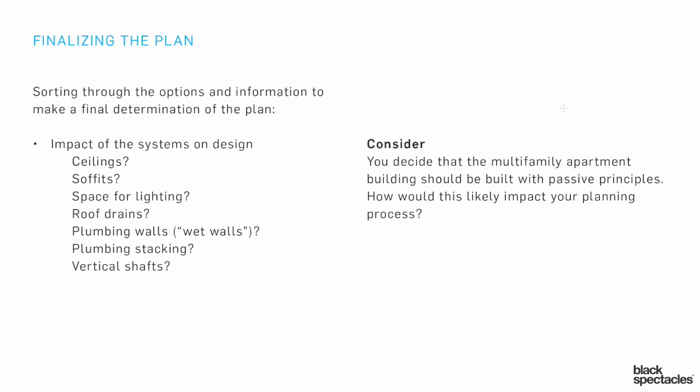Let's think of an example where we have an issue coming from the program and the options we went through, and we're trying to think about the impact that issue is going to have on our final plan making. Let's say we decided we're doing a multi-family apartment building and we want to build it with passive principles. What would be the issues from that decision that would impact our planning process?